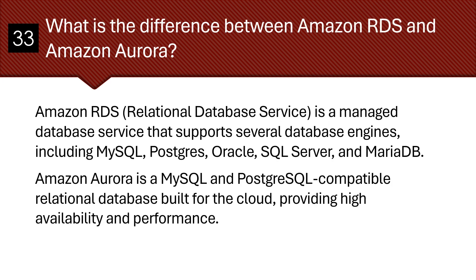What is the difference between Amazon RDS and Amazon Aurora? Amazon RDS is a managed database service that supports several database engines including MySQL, PostgreSQL, Oracle, SQL Server, and MariaDB. Amazon Aurora is a MySQL and PostgreSQL compatible relational database built for the cloud, providing high availability and performance.